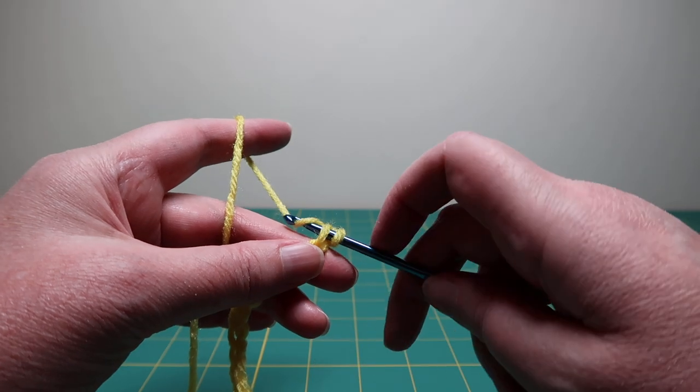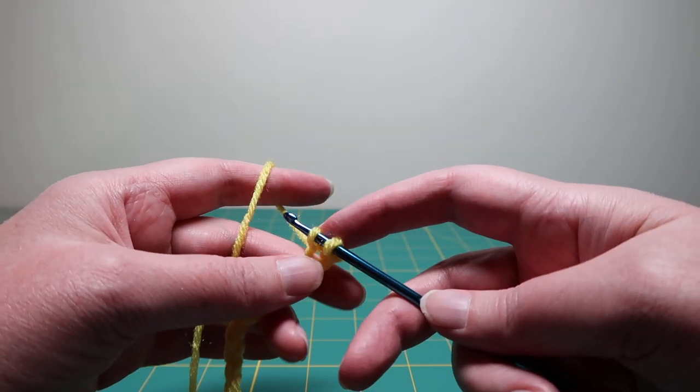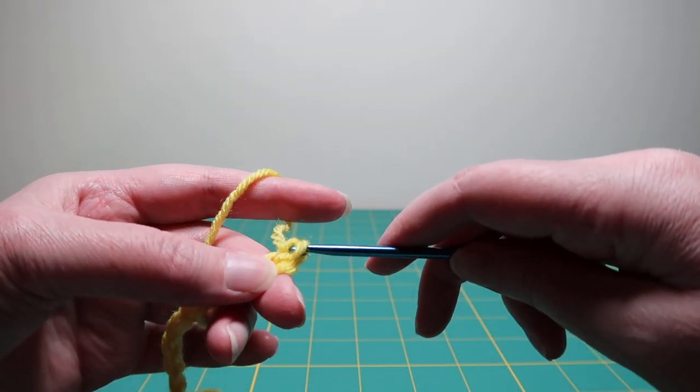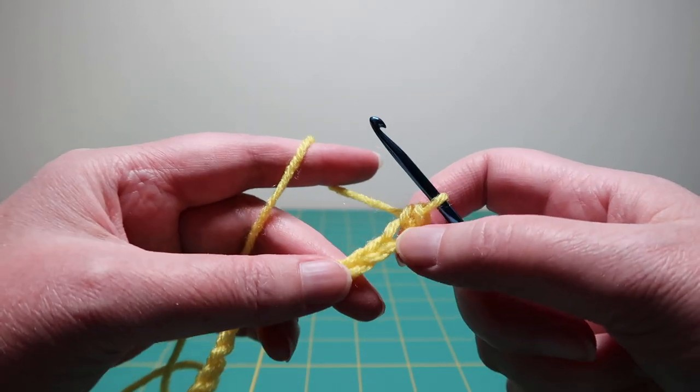And then you yarn over, pull it through, then yarn over, and pull through both loops. And that is a single crochet.